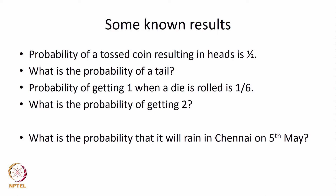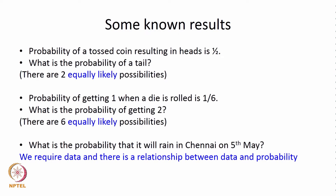These are some known results we have learnt from high school. Now let us ask another question: what is the probability that it will rain in Chennai on 5th May? For the coin and die, there are equally likely outcomes and therefore each probability is half or 1 by 6. But for the rain question, we require data — otherwise it will be an opinion, and we do not want to make decisions based on opinion. So the next best thing we could do is ask for data: go back in the past and find out on how many years on 5th May it has actually rained in Chennai. There is a relationship between data and probability.